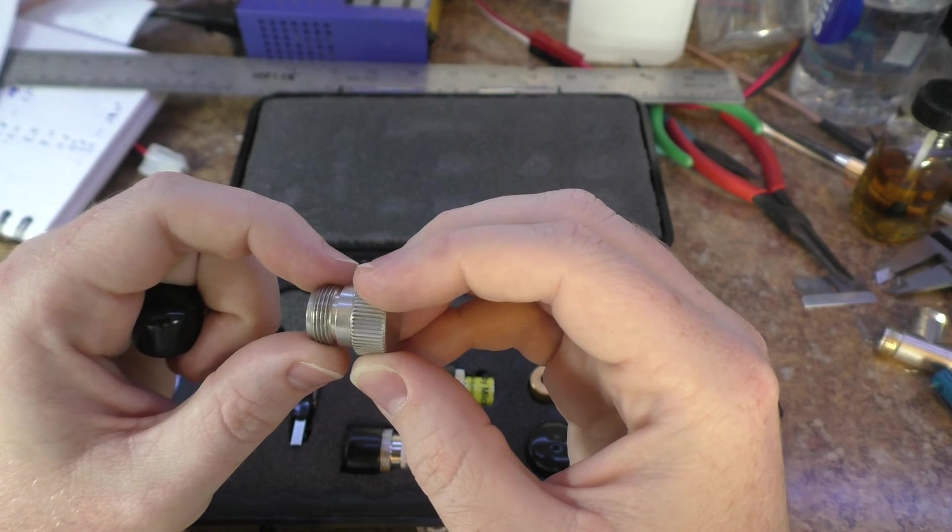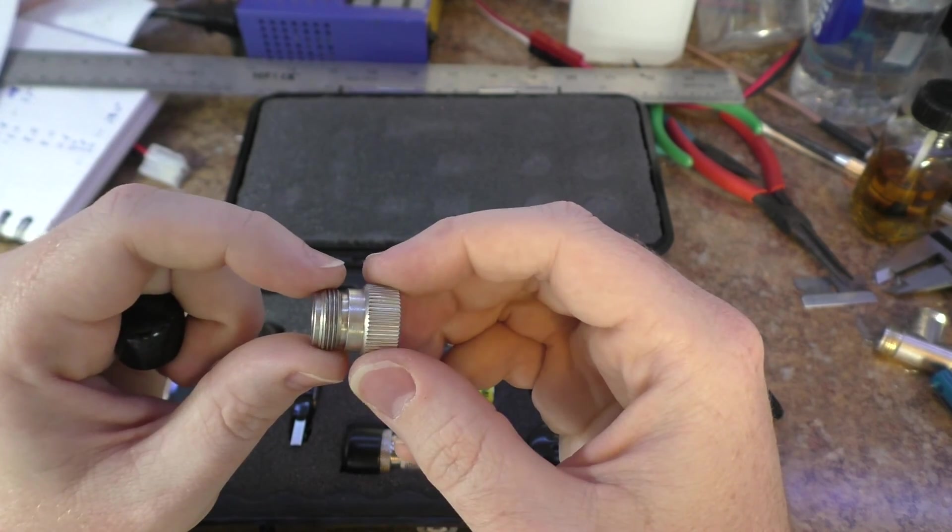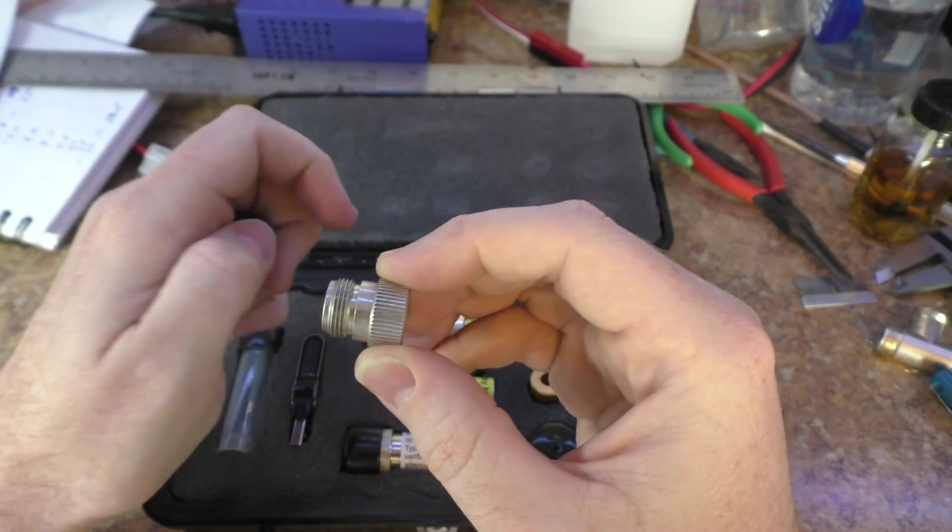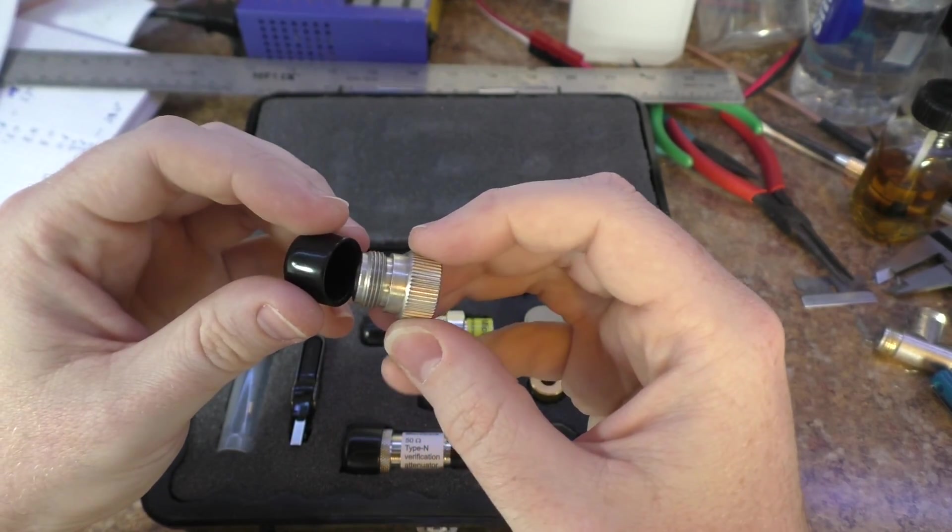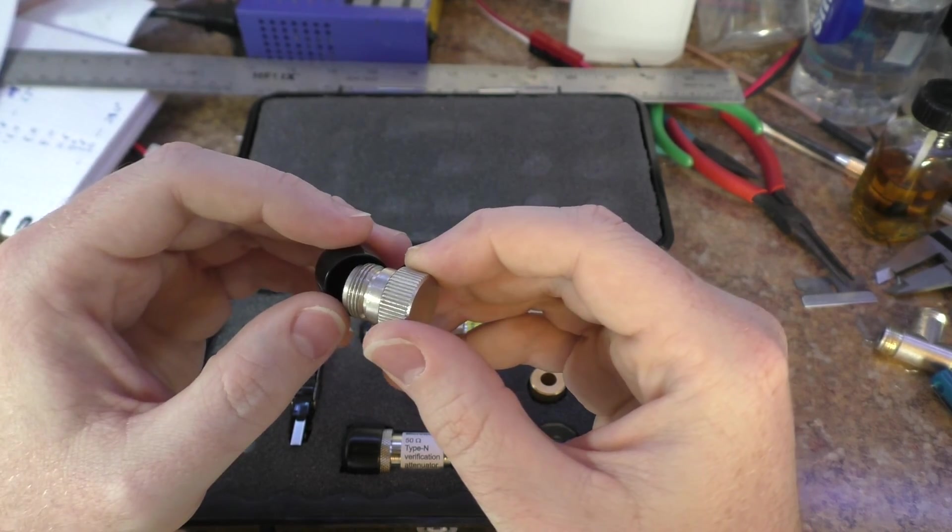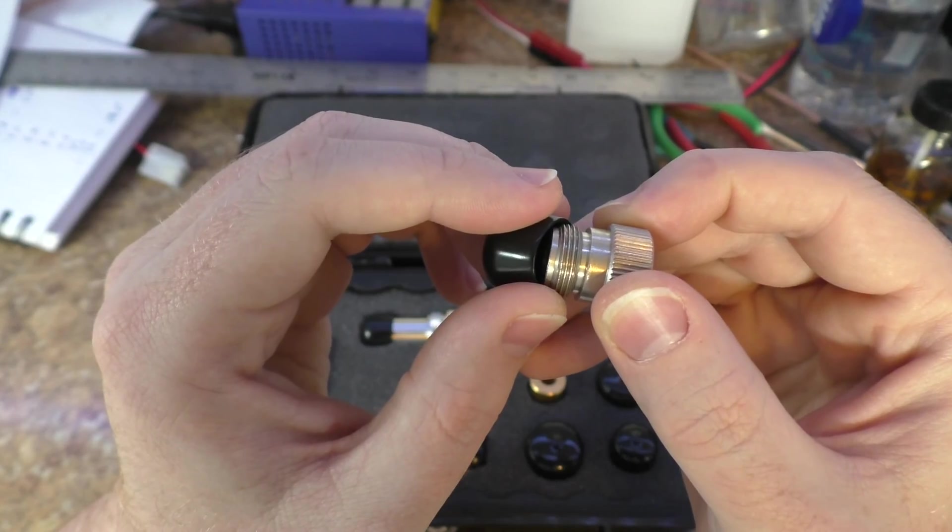I did notice some of the machining here on the end around the threading was not as clean as I would think it would be, but that really doesn't matter. It's not the critical part for verification. I just noticed a little bit of hash.